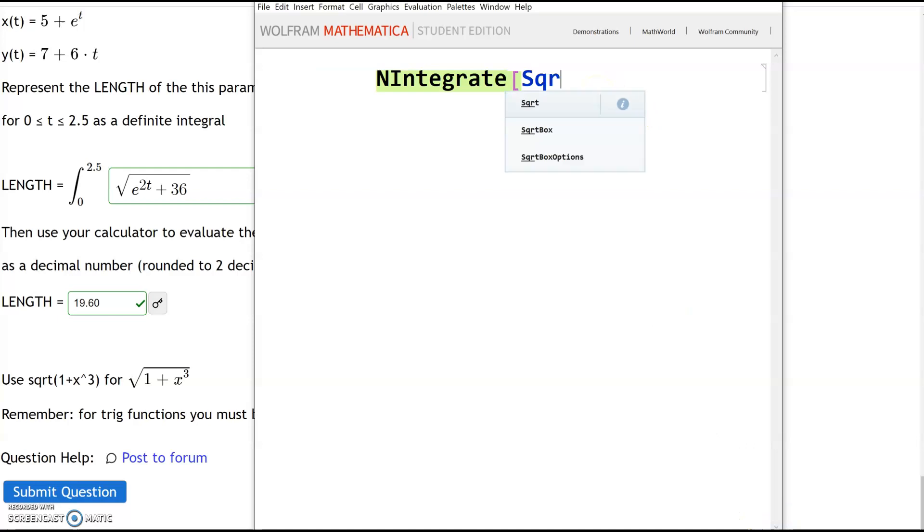So NIntegrate square root of—I'll do Exp[2t], that's same as e to the 2t power—plus 36. And then comma, and then t goes from 0 to 2.5. Oh, did I miss the square root? Yeah there we go. I keep forgetting. So it's the square root of e to the 2t power plus 36.